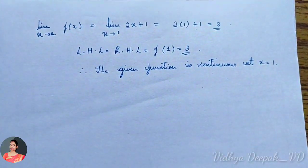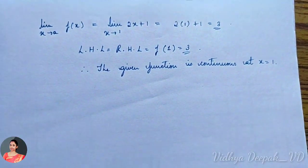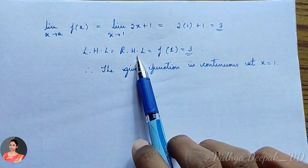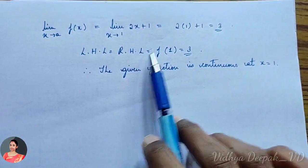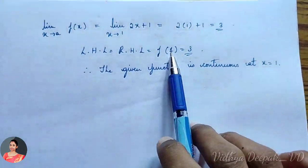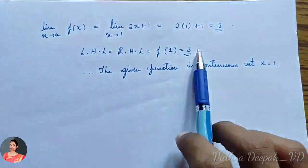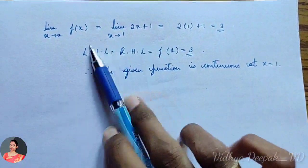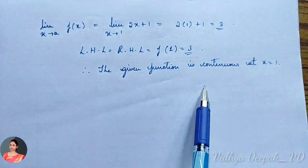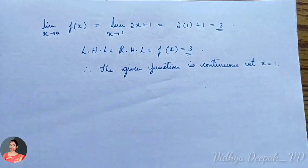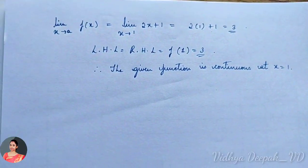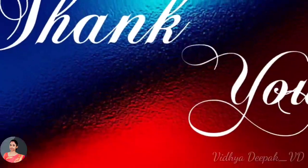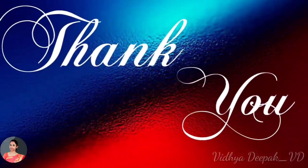These are the conditions to be checked: left-hand limit should equal right-hand limit, and that should equal f(a). Since all three are equal — LHL = RHL = f(1) = 3 — we can say the function is continuous at x = 1. Thank you.